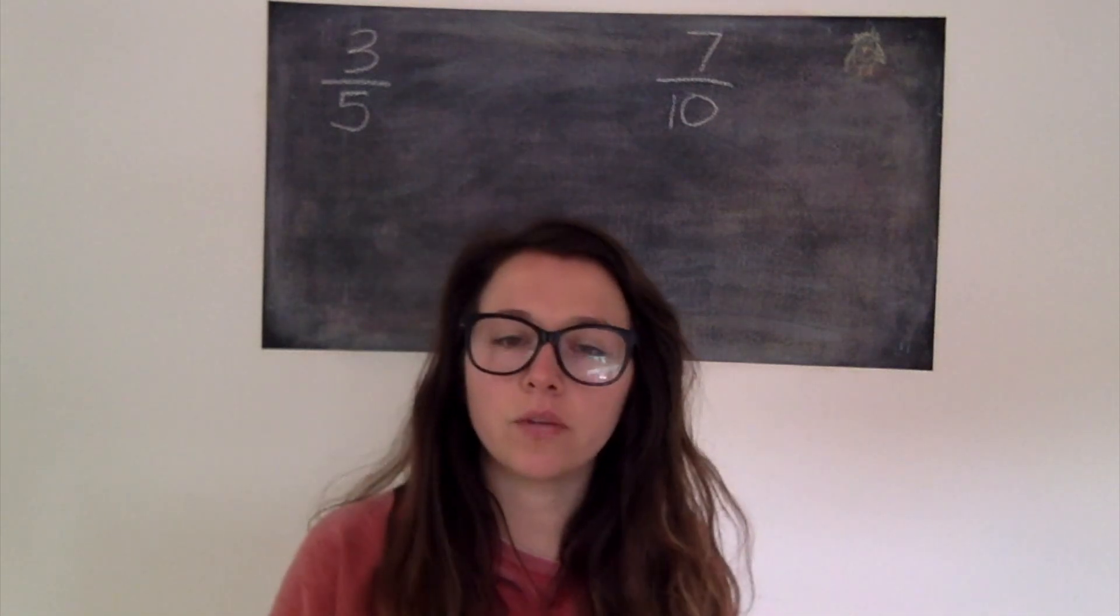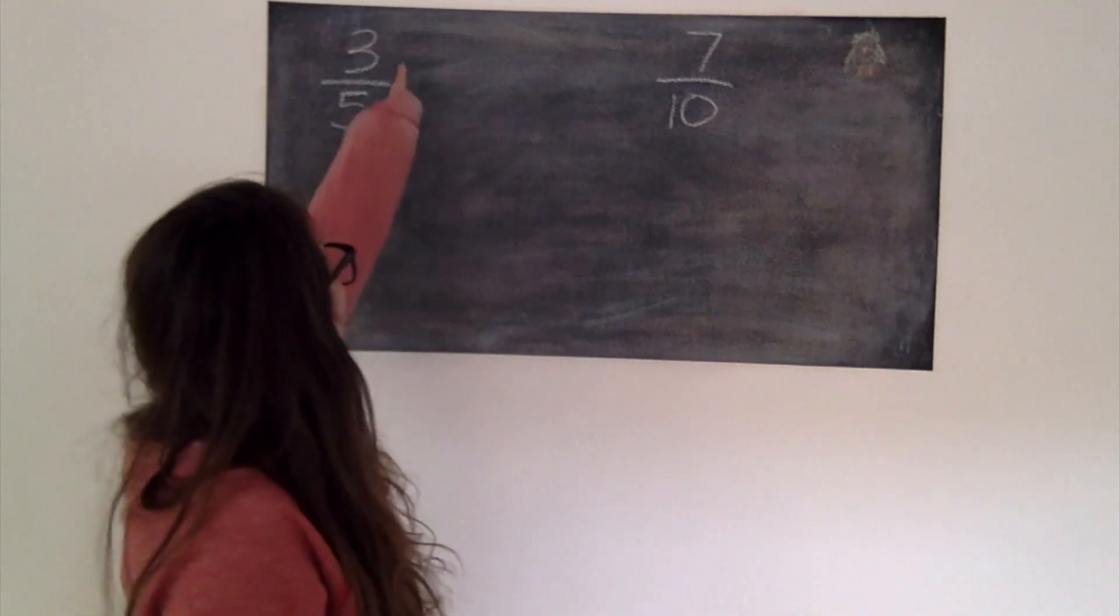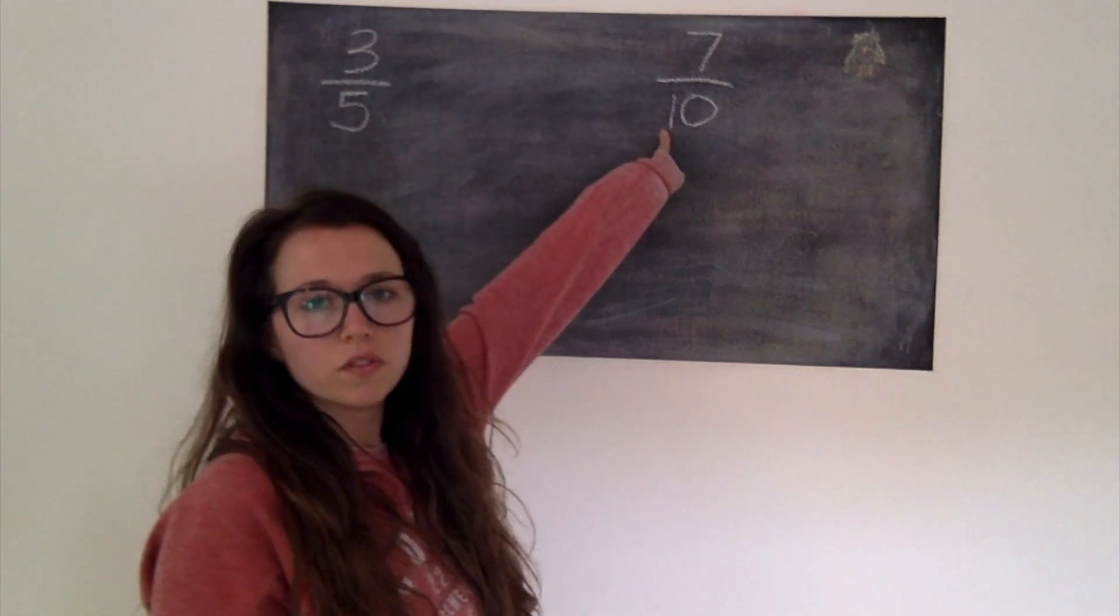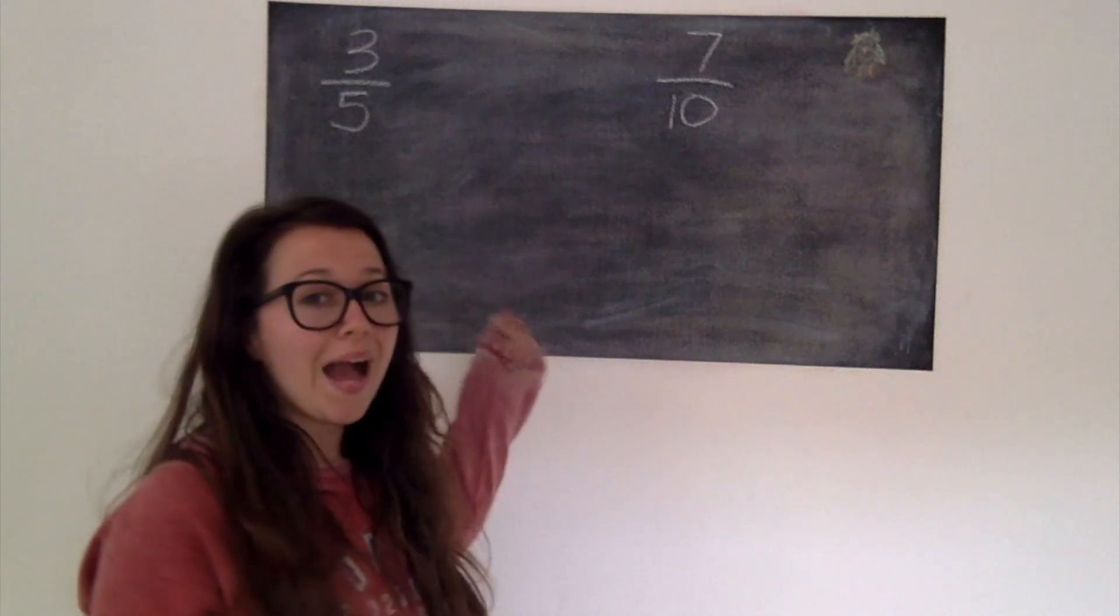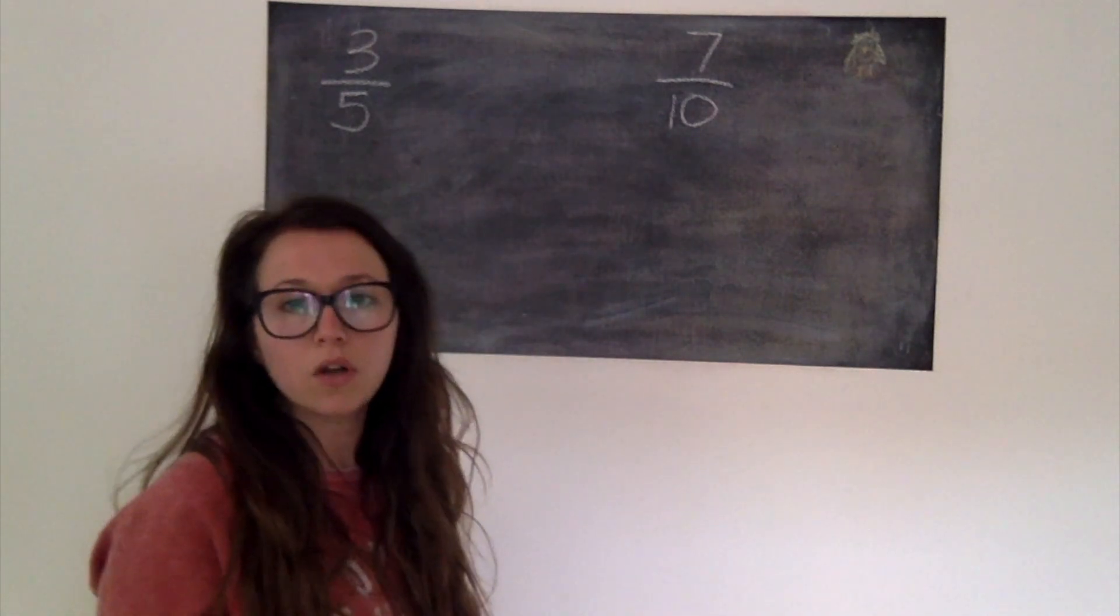Now we're going to have a go at comparing when our 2 fractions don't have the same denominator. So I've got 3/5ths and 7/10ths. So the first thing that we should be thinking about is about how we can make our denominators the same. We call this a common denominator.